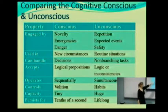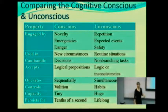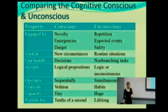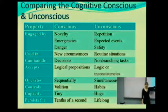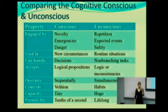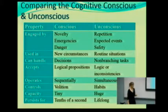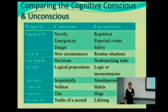The consciousness operates sequentially; the unconscious operates simultaneously. We'll talk more about that in a few minutes. The consciousness — the controls are volition, you have control over it. The unconscious is more habits and automatic responses. The capacity of the consciousness is tiny compared to the unconsciousness. In fact, we actually don't even know what the capacity of the unconsciousness is.